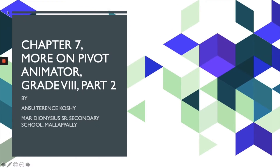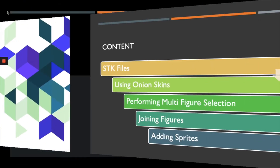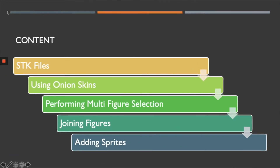Welcome back. This is Anso here. This is the second part of chapter 7 — more on Pivot Animator. Today we will be discussing the following contents: SDK files, using onion skins, performing multi-figure selection, joining figures, and adding sprites.